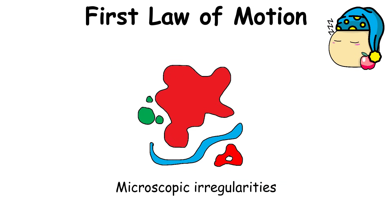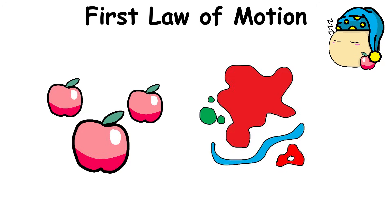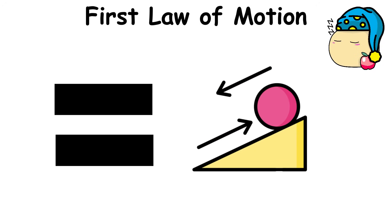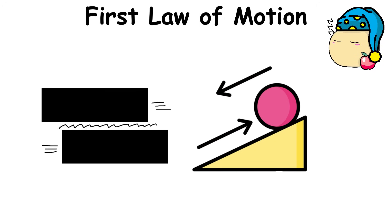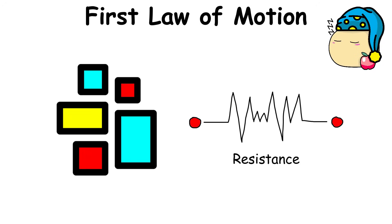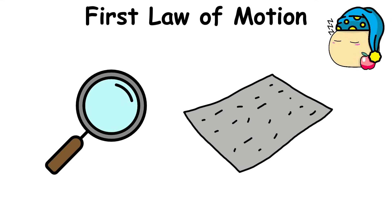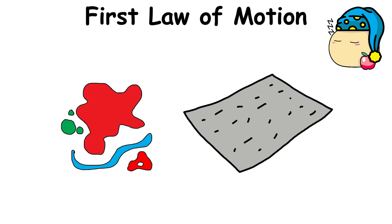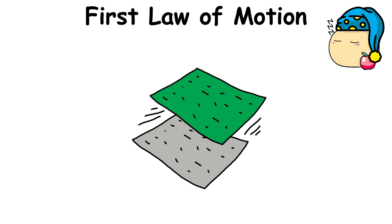There are microscopic irregularities in objects, and friction happens when the surfaces of two objects move against each other and cause resistance due to the irregularities. Simply stated, rougher surfaces have more irregularities and will cause more friction when rubbed against other surfaces.